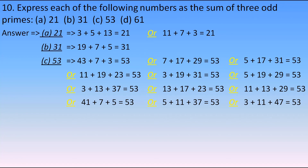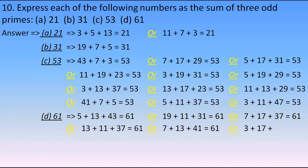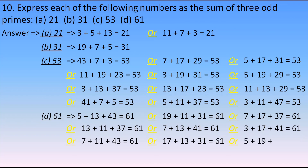For 61, it can be expressed as 5 plus 13 plus 43, or 19 plus 11 plus 31, or 7 plus 17 plus 37, among many other combinations. There are many ways to express 61 as the sum of 3 odd primes — just remember one way, that's okay.